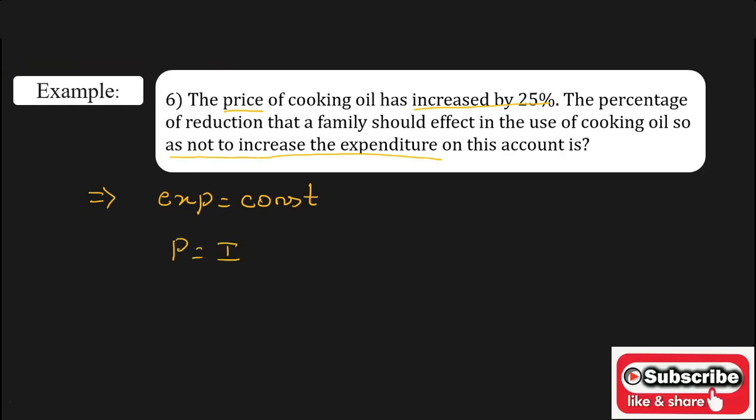The price is getting increased by 25 percent, and to keep the expenditure constant when the price is getting increased, we have to decrease the consumption. But by what percent? That is given by R divided by 100 plus R into 100 percent.